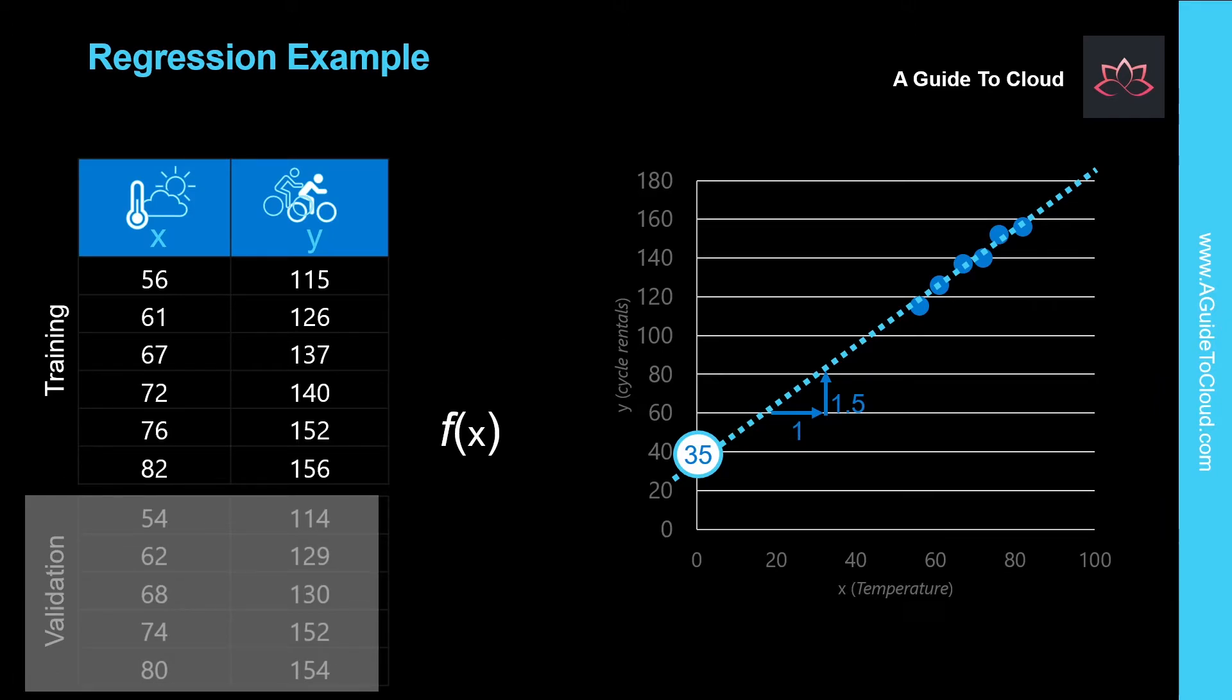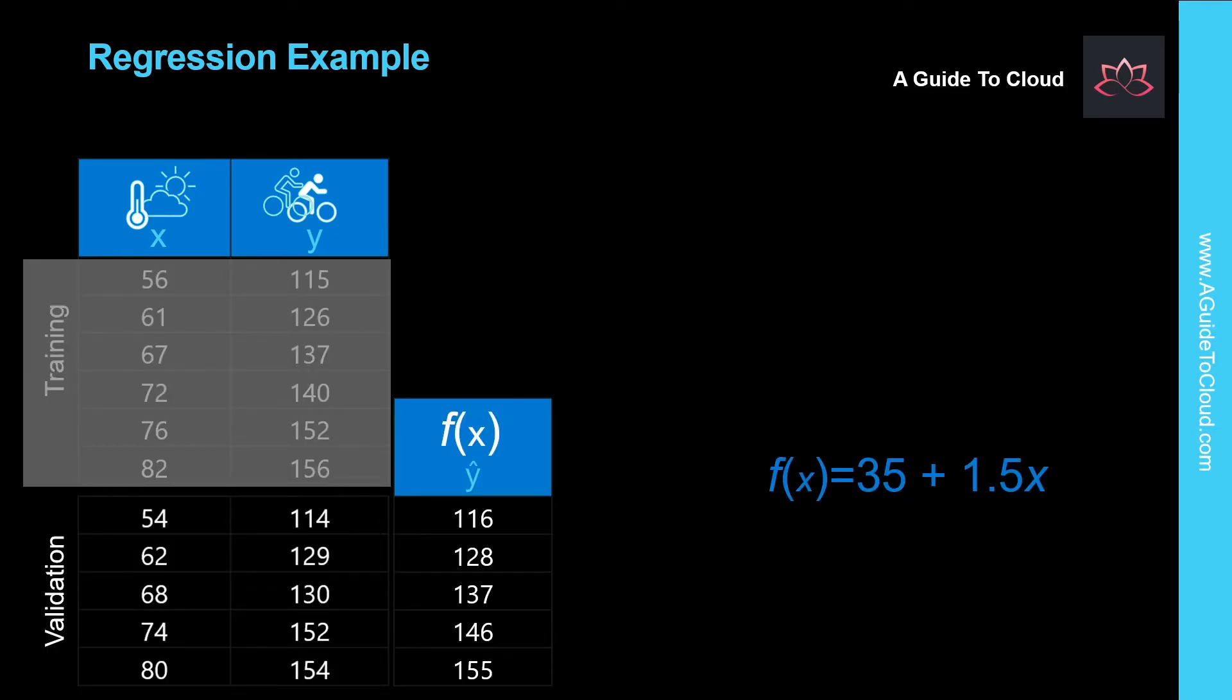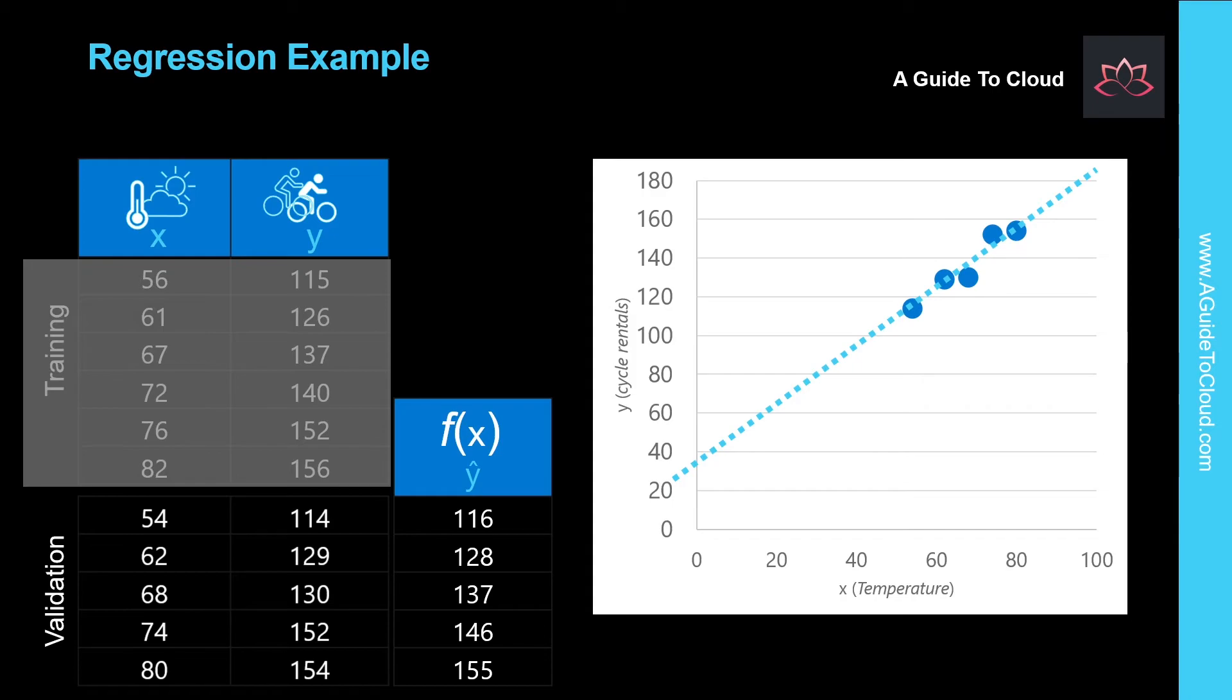Now we can test this function with the validation data that we held back. Here are the values we get from the function for the temperatures on these days. Let's plot the actual values from the validation data along with the line from which the predicted values were calculated. Now we can see how well the model predicts by measuring the difference between the predicted values and the actual values that we know to be true.